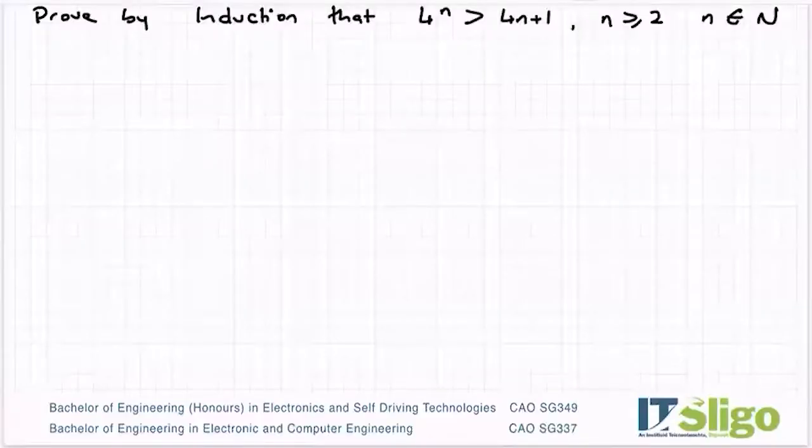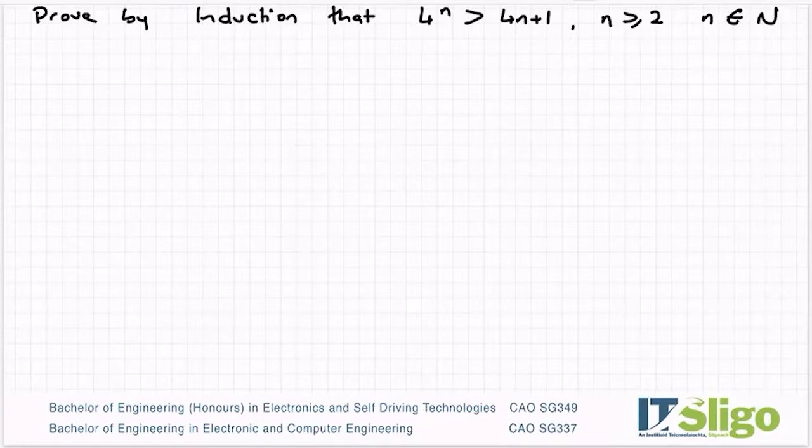Prove by induction that 4 to the power of n is greater than 4n plus 1, where n is greater than or equal to 2, and n is an element of the natural numbers.